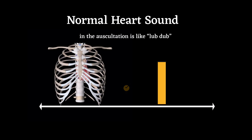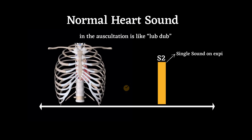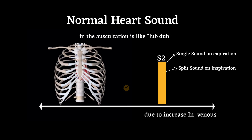The second sound, dub or S2, is caused by the closure of the aortic and pulmonic valves. It is characterized as a single sound on expiration and split on inspiration, due to increased venous return causing a delay of the pulmonary valve closure.